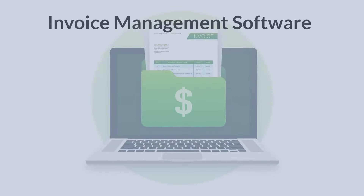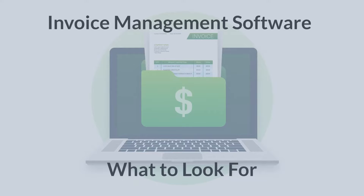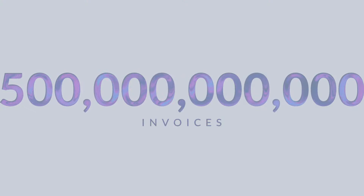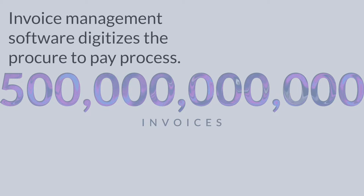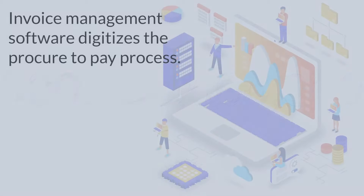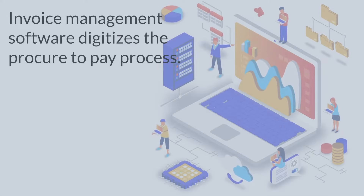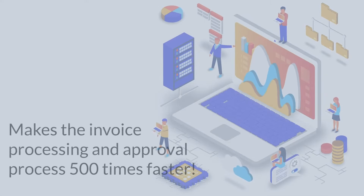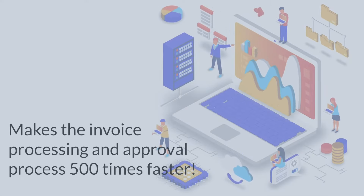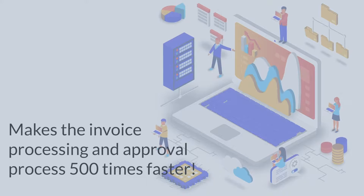In this video, we'll explore why so many organizations are moving to AP automation, and then show you what to look for. Did you know that in 2019, the total number of invoices exchanged around the world exceeded 500 billion? That's why companies are turning to invoice management software that digitizes the entire procure-to-pay process. AP automation makes invoice processing up to 500 times faster.